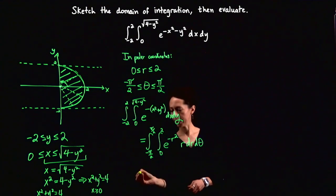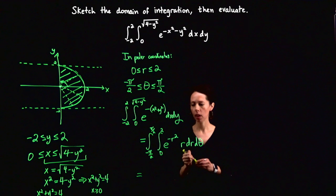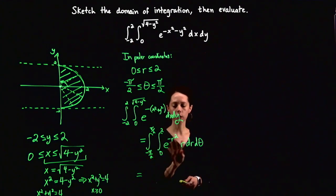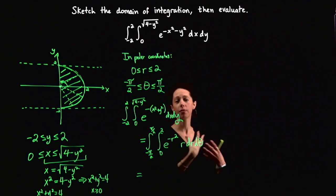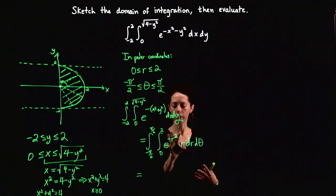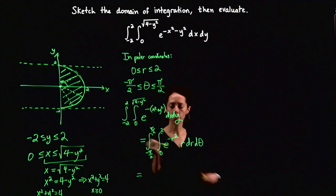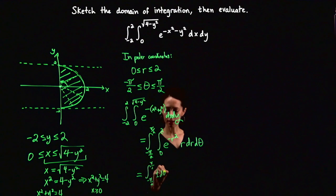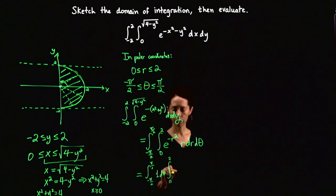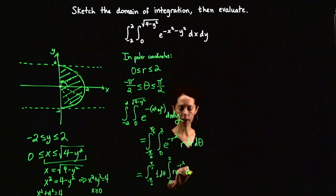The integrand only has r dependence with no theta dependence, over constant bounds. When your bounds are constant and the integrand factors as a function of r times a function of theta — here just the constant 1 — you can write the double integral as the product of two single integrals: the integral from negative pi over 2 to pi over 2 of 1 d theta, times the integral from 0 to 2 of r e to the negative r squared dr. This is optional — you can also just do the iterated computation in the usual way.